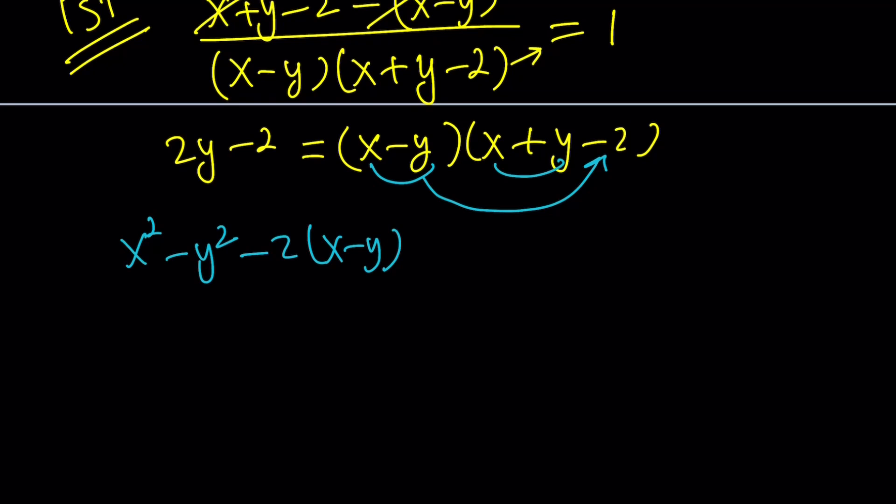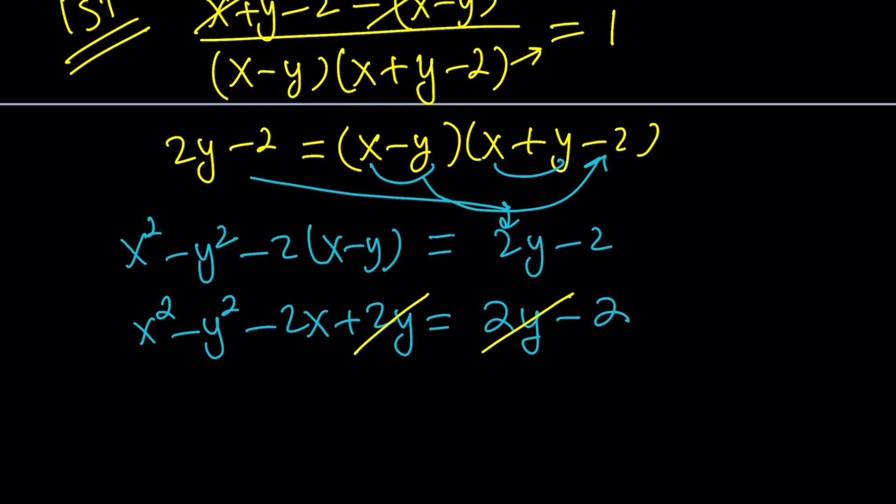And then we're done. That's all you have to do. Now let's go ahead and simplify this. This, of course, is going to equal 2y minus 2. So I switch sides here. And now, if you simplify this, you're going to get x squared minus y squared minus 2x plus 2y is equal to 2y minus 2. And obviously, 2y is going to cancel out. And we end up with something like this.